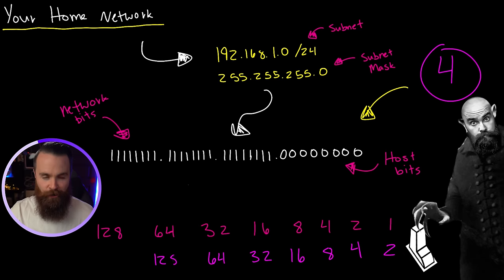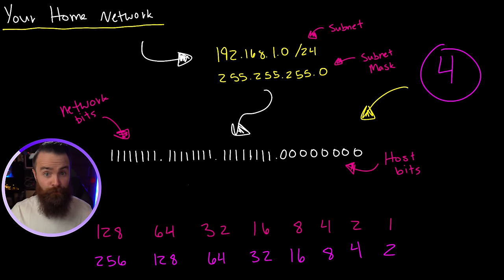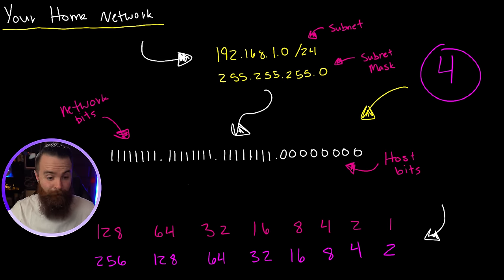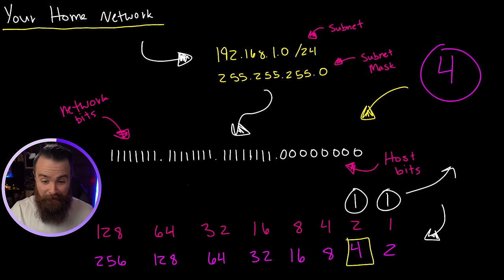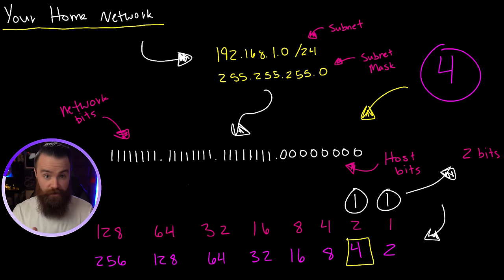That's where a new friend comes in — Nosferatu has a brother. Where Nosferatu helps us with decimal-to-binary conversion, his brother Nosferatu 2 helps us with this problem, and he even has his own chart. Every number in that chart is just the number in the Nosferatu chart times two. So we say, 'Hey Nosferatu 2, we need four networks.' And he says four is right there — and that took one, two bits to get there. That's exactly how many host bits we have to steal to create four networks.